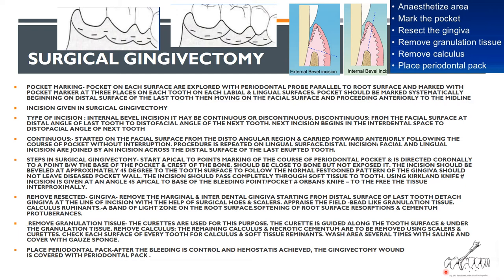There are two types of incisions in gingivectomy: external bevel and internal bevel. The external bevel is the classic gingivectomy incision. The internal bevel is also known as the reverse bevel because it is the reverse of the gingivectomy incision, and it is used in flap surgeries. The external bevel is used mainly in cases of gingival enlargement and crown lengthening, as it removes a larger portion of tissue.